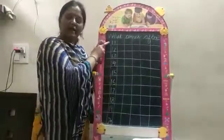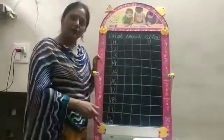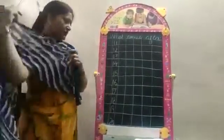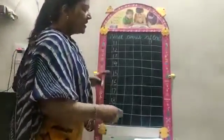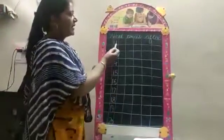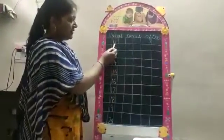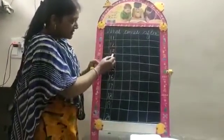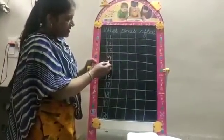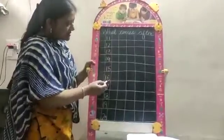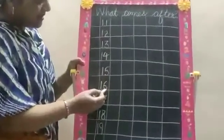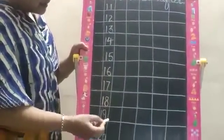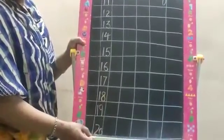From number 11 to 20, what comes after. So first of all you just read with me: 11, 12, 13, 14, 15, 16, 17, 18, 19, 20.